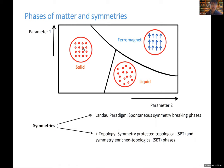For example, a solid has regular patterns of atoms arranged in a lattice, whereas a liquid has something completely irregular — so there's a breaking of symmetry. Recently, if you add topology to the game, you can get more interesting phases such as symmetry-protected topological phases or symmetry-enriched topological phases. The basic idea is that symmetries play a very important role, mainly in equilibrium, where the system has settled down to some thermal state.